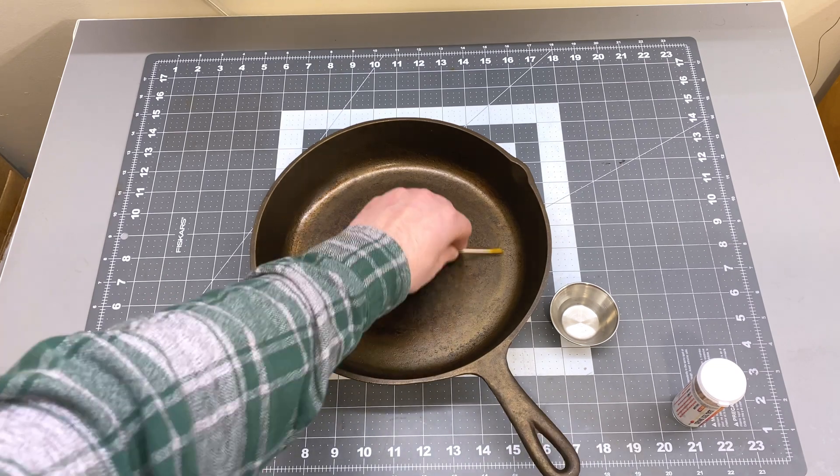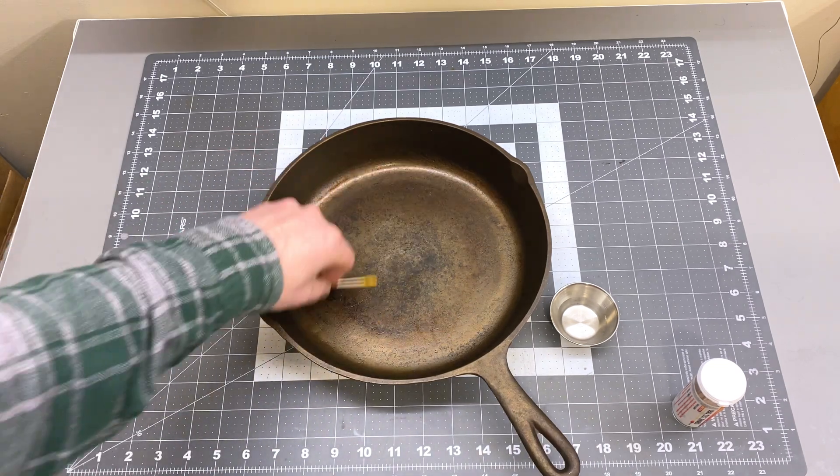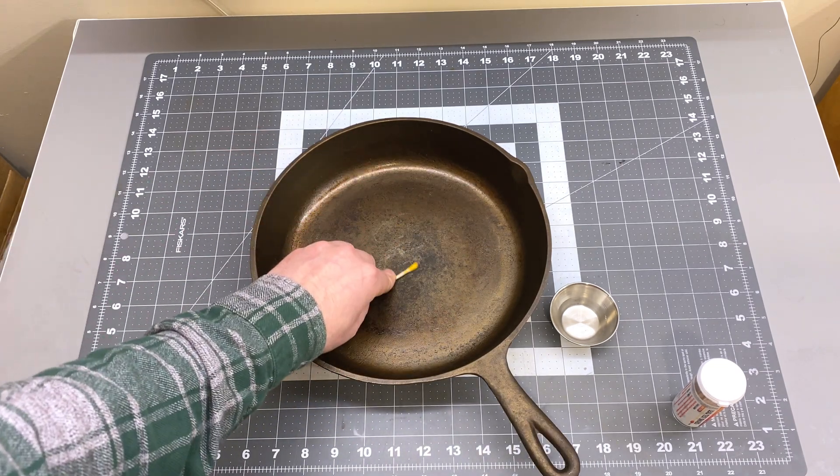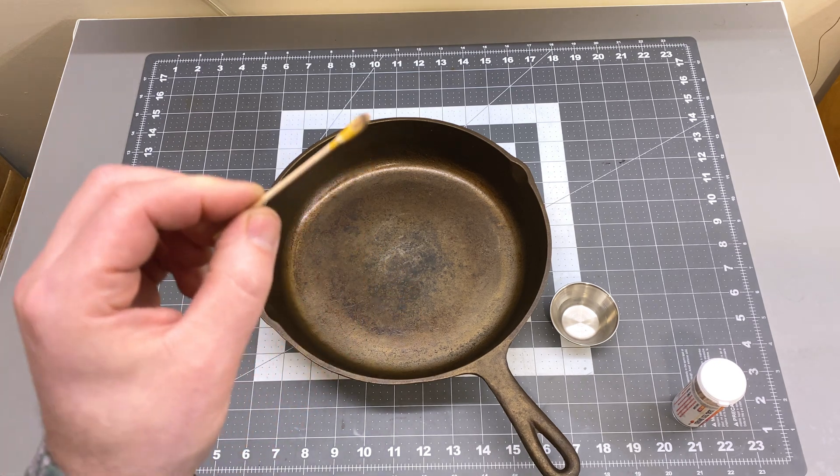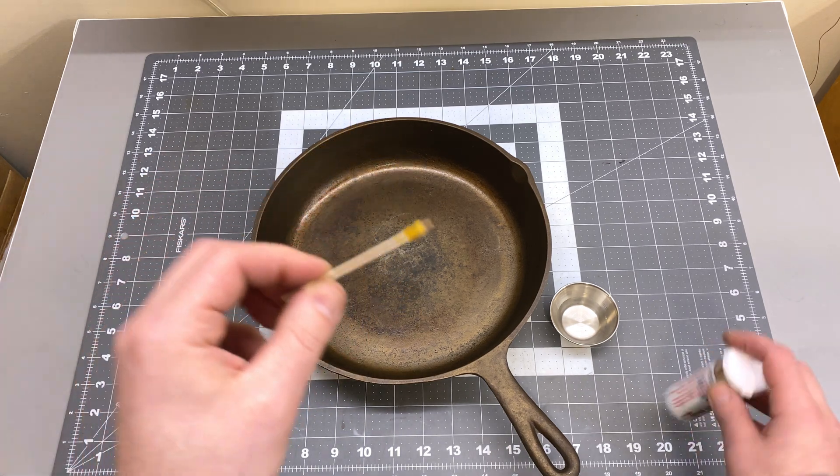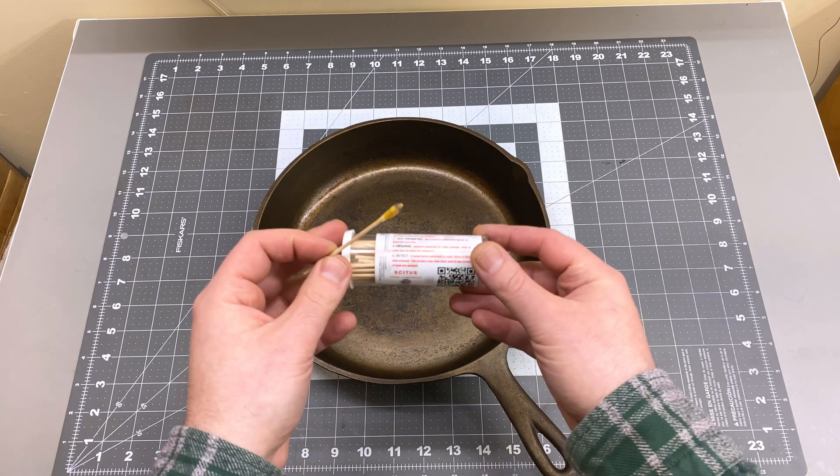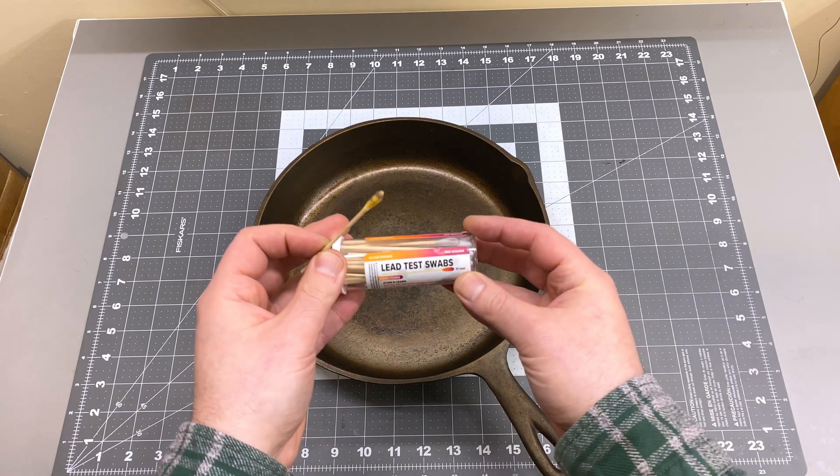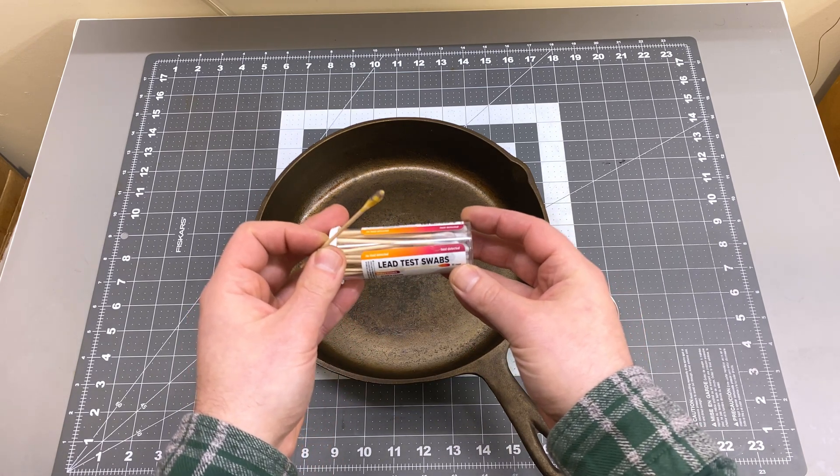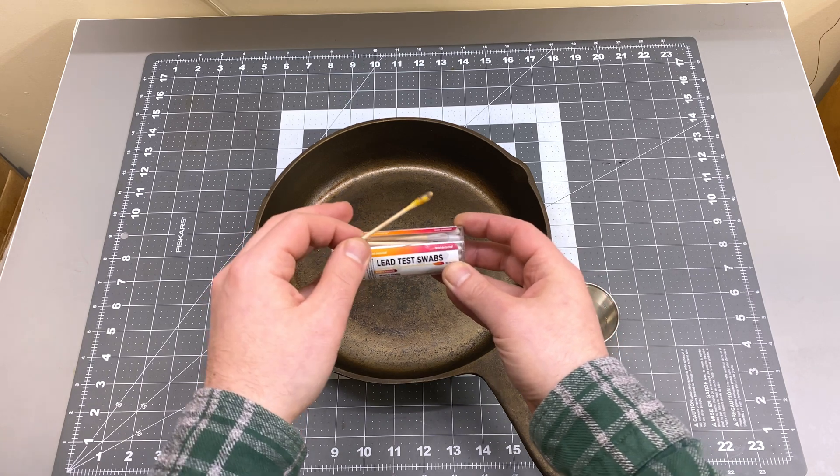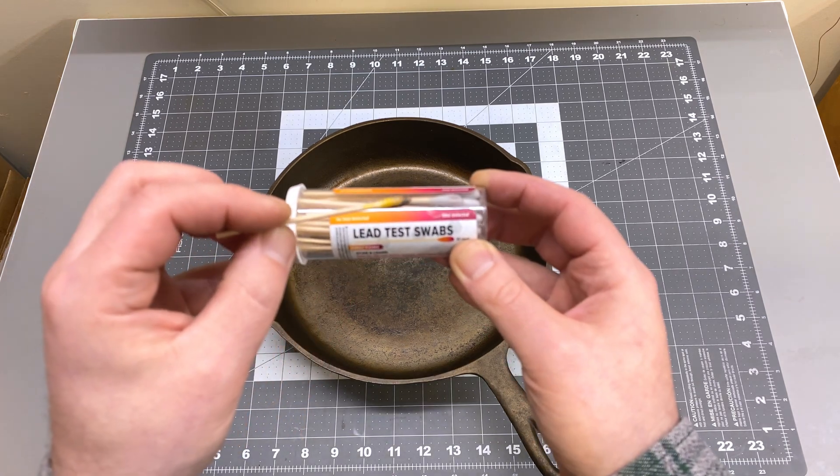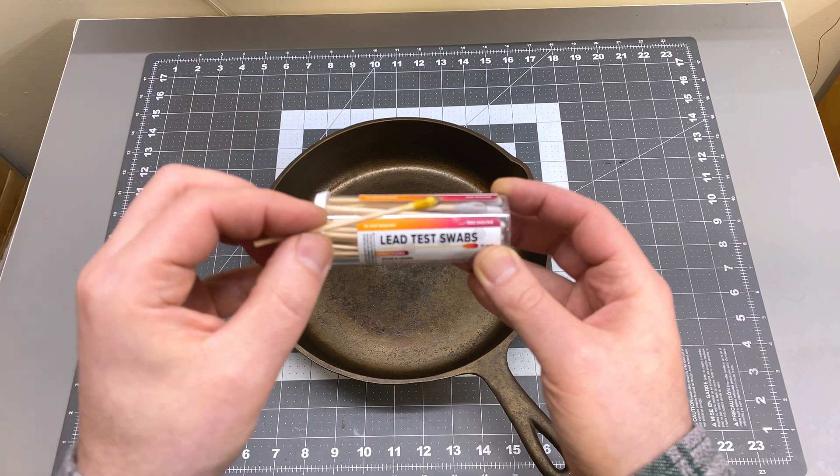So the instructions say to swab the pan or surface for 30 seconds and then to see. And I don't see, though it's a little out of focus, I don't see any change in color other than just wiping off some built up carbon on the pan. So that seems like a negative test result.